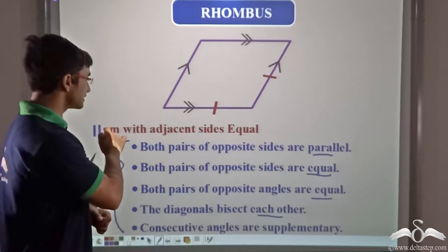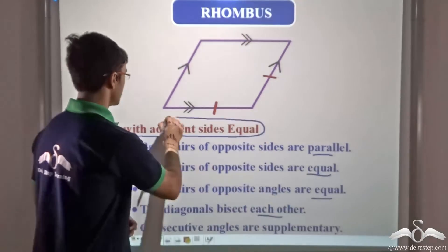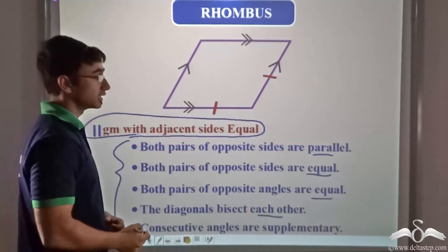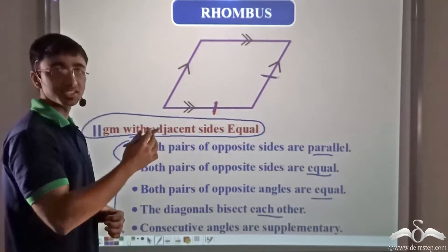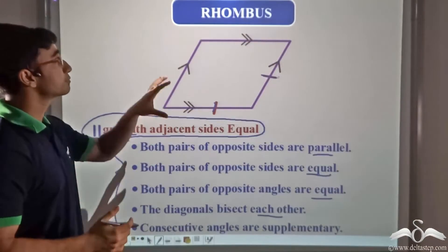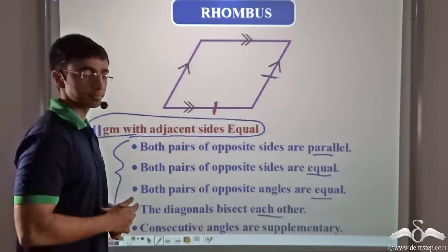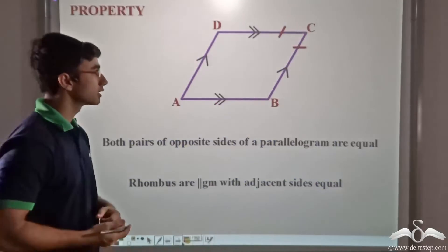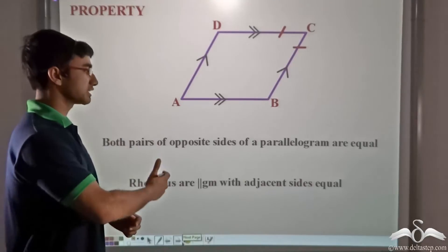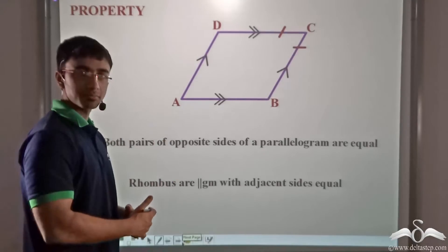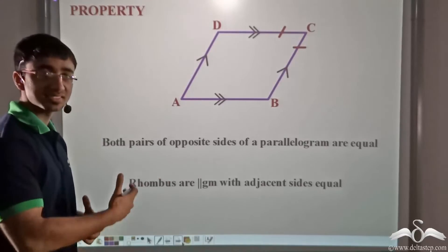A rhombus is a parallelogram with adjacent sides equal. As you can see from the figure, this side is equal to this adjacent side. This is a property exclusive to rhombus. The property states that both pairs of opposite sides of a parallelogram are equal, and a rhombus is a parallelogram with adjacent sides equal.